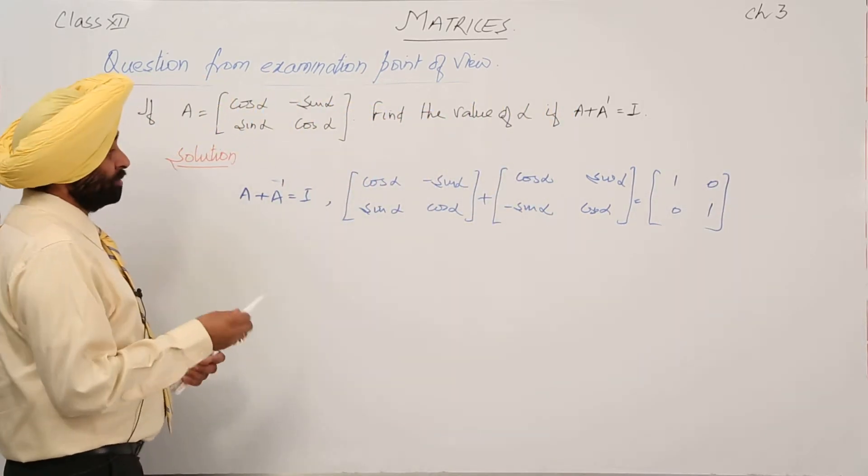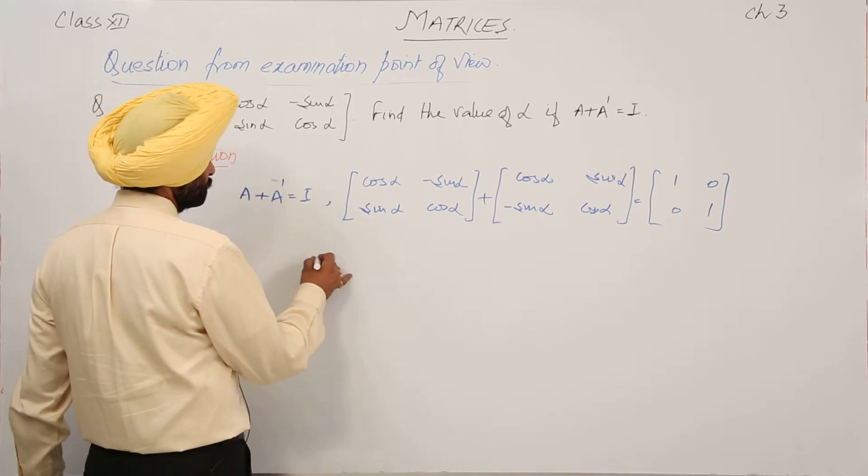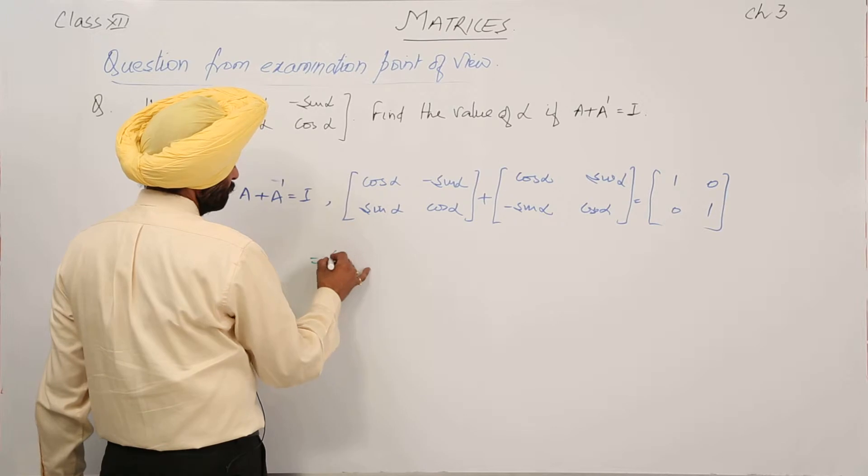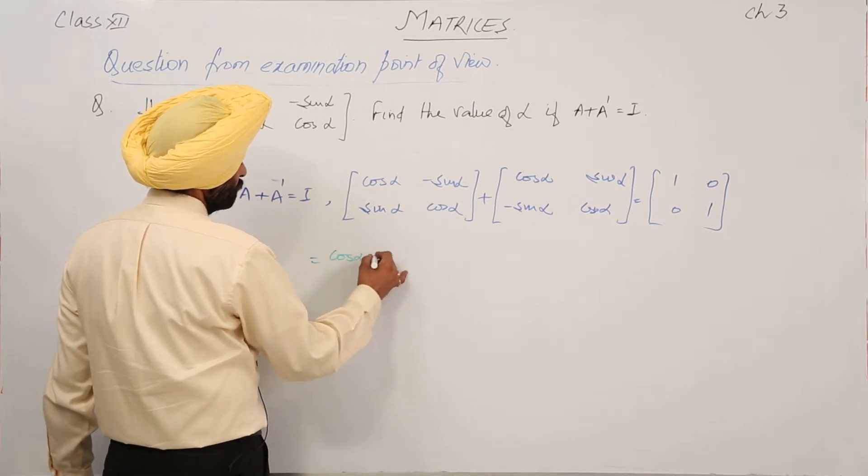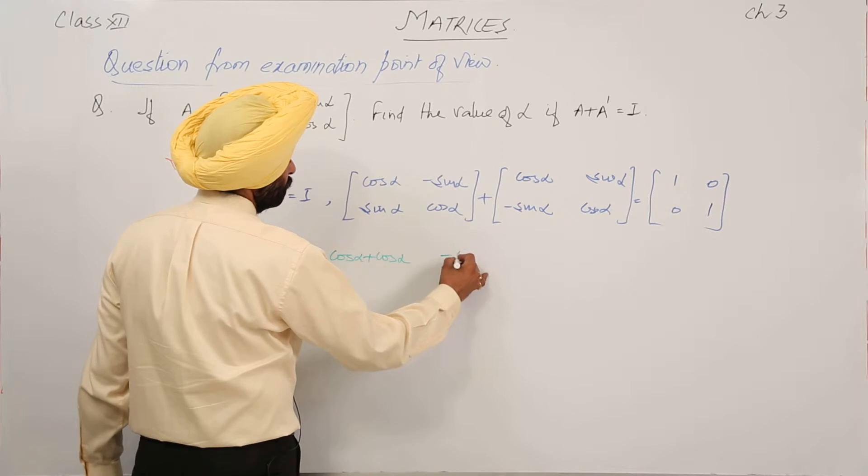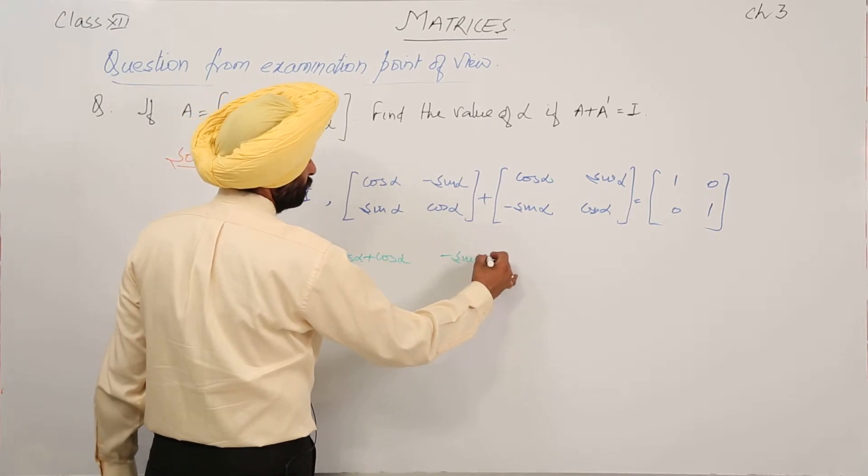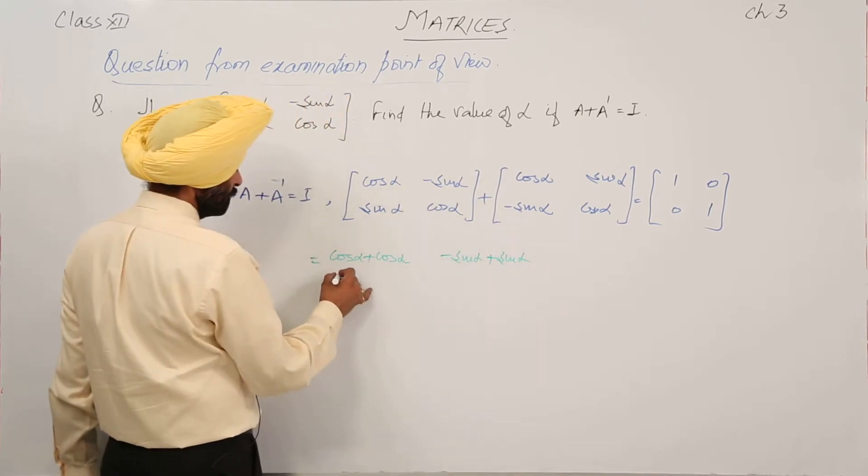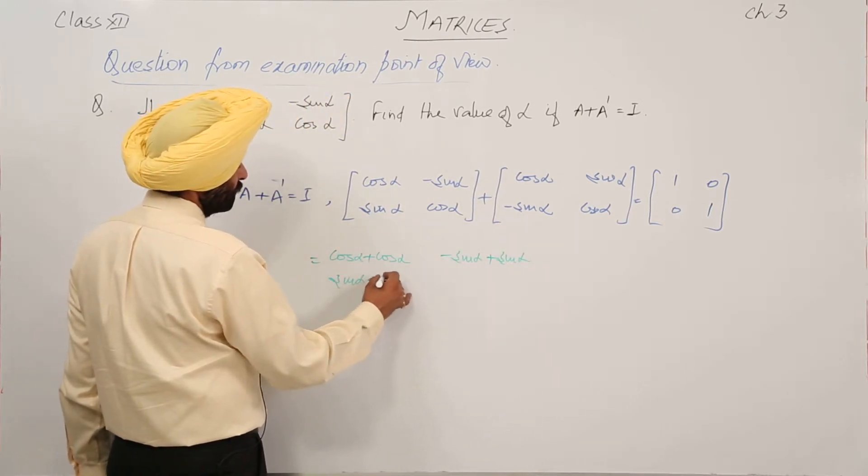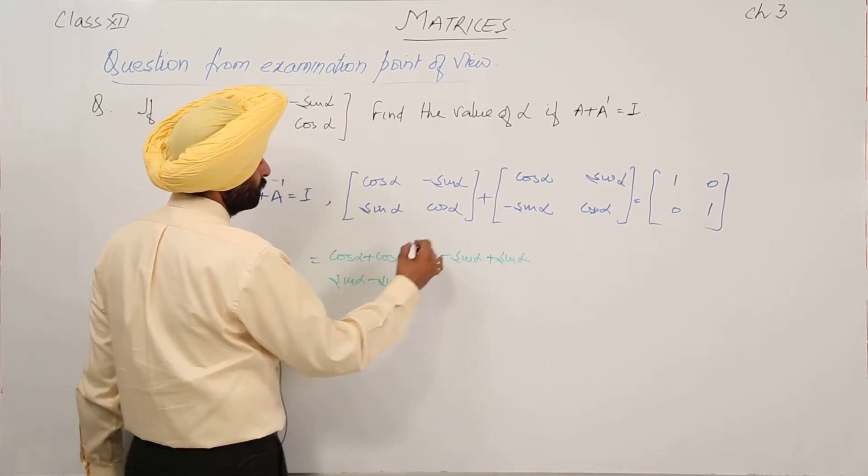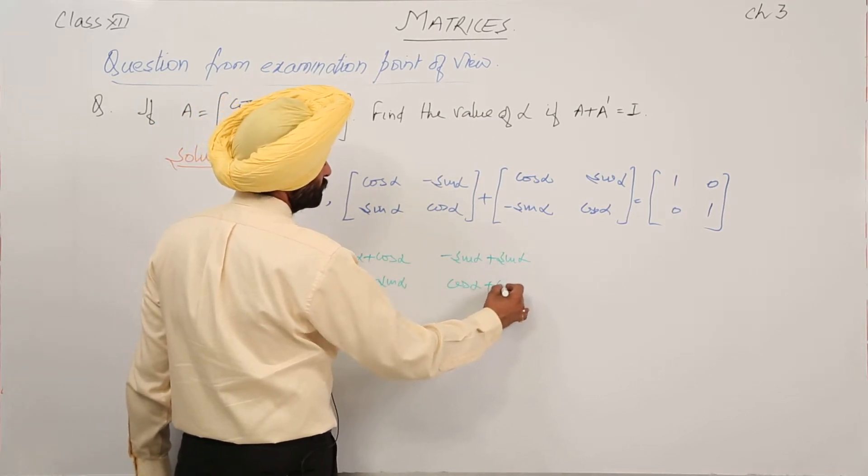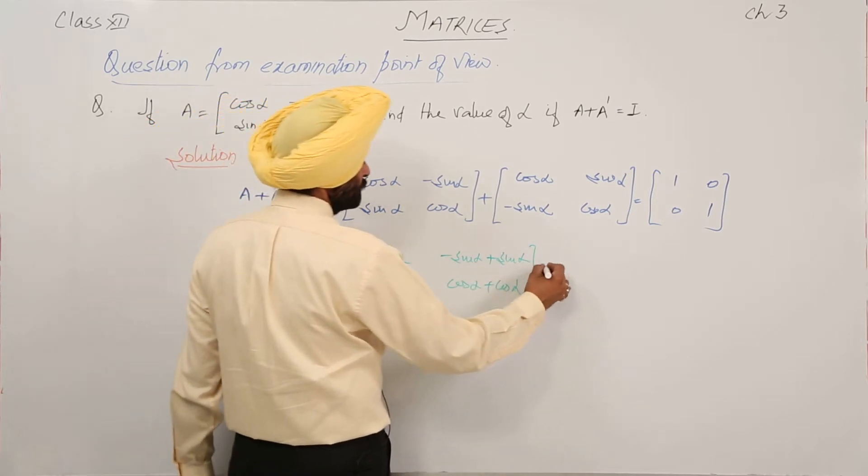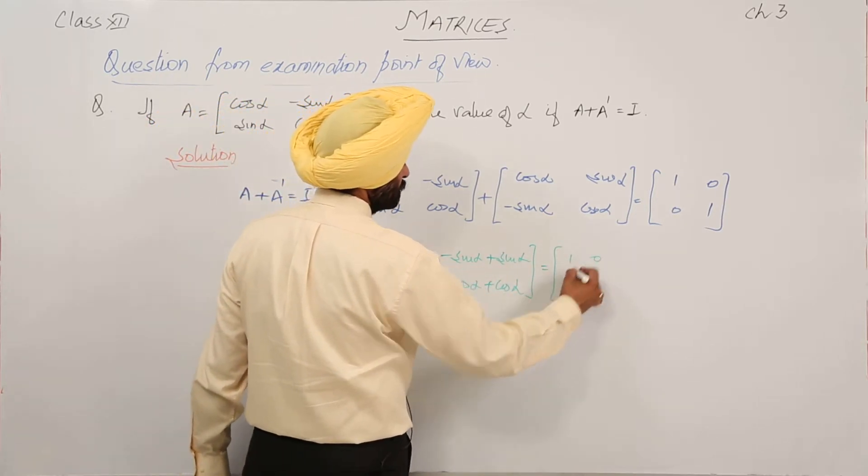Now adding, we get cos alpha plus cos alpha, minus sin alpha plus sin alpha, sin alpha minus sin alpha, and cos alpha plus cos alpha, equal to 1, 0, 0, 1.